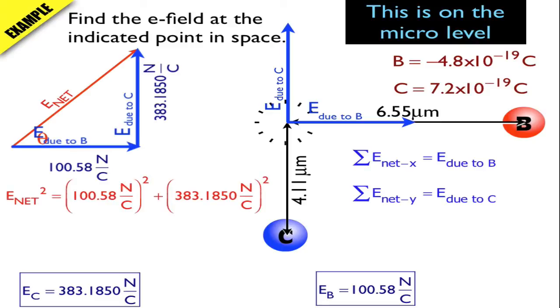So here I'll use trig and use Pythagorean's theorem to find the magnitude of the net electric field. And there it is, at 369 newtons per coulomb. And to find the direction, I'm going to use trig, and I'll use the tangent function. So tangent theta is equal to opposite over adjacent. Therefore, theta is equal to 75.3 degrees.